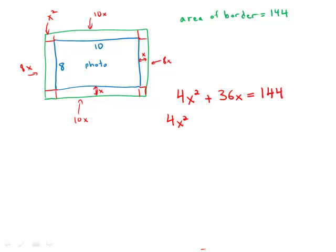We'll move everything to one side of the equation because this is a quadratic, and the first step in solving a quadratic is always to get everything on one side equal to zero. We can divide all terms by four to enormously simplify the process, giving us X squared plus 9X minus 36 equals zero.